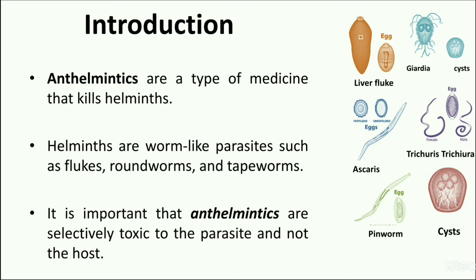As it is clear that anthelmintics are toxic in nature, selective toxicity becomes an important parameter. Anthelmintics must be selectively toxic to the parasite. This is usually achieved either by inhibiting metabolic processes that are vital to the parasite but not vital to or absent in the host, or by controlling the pharmacokinetic properties of the compound.